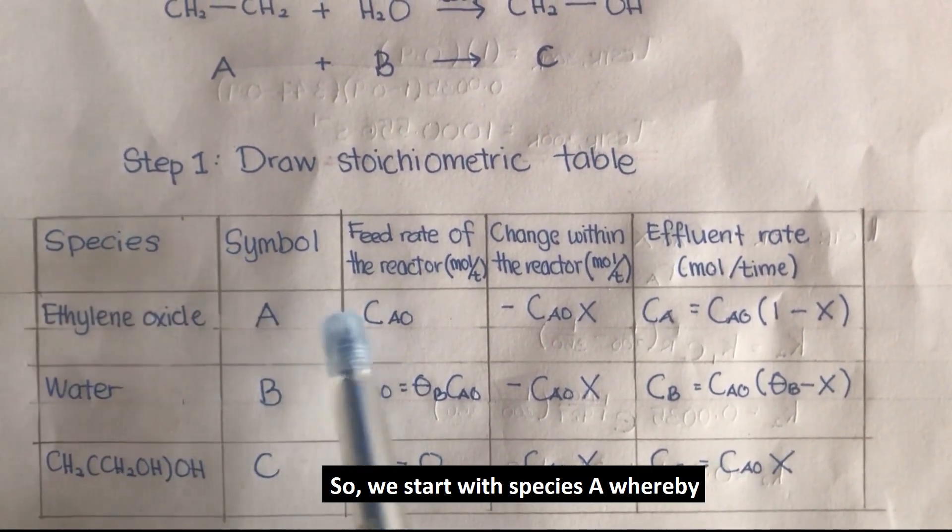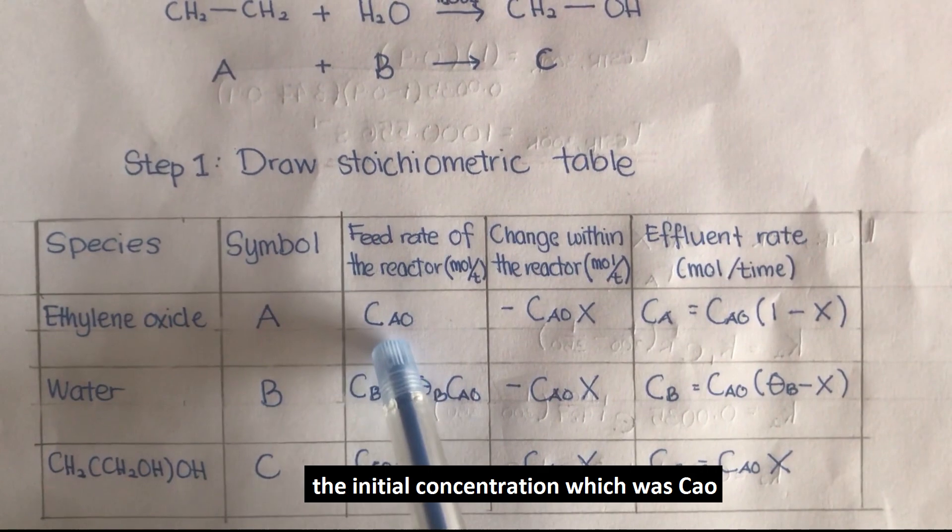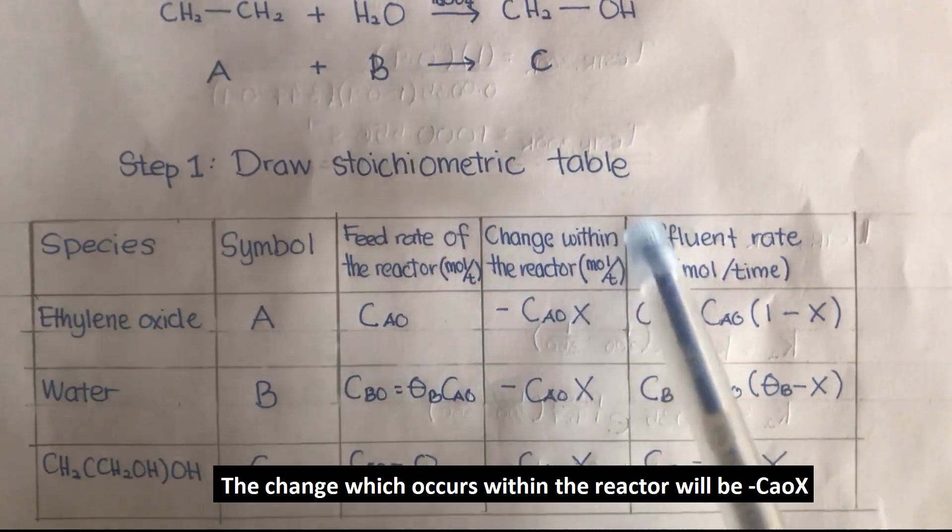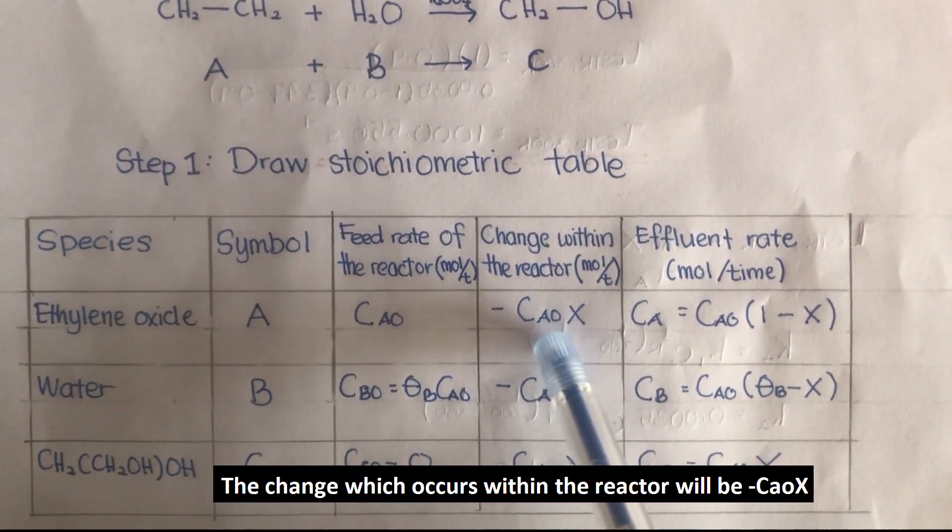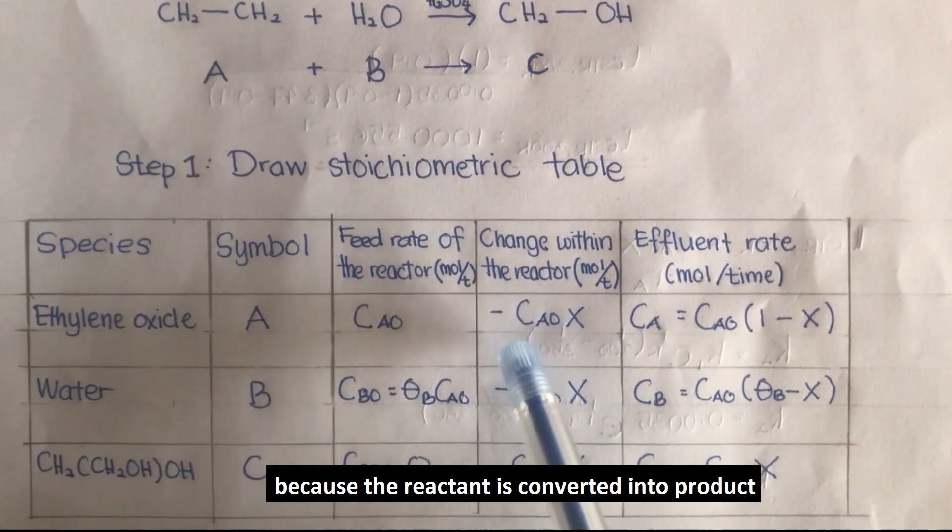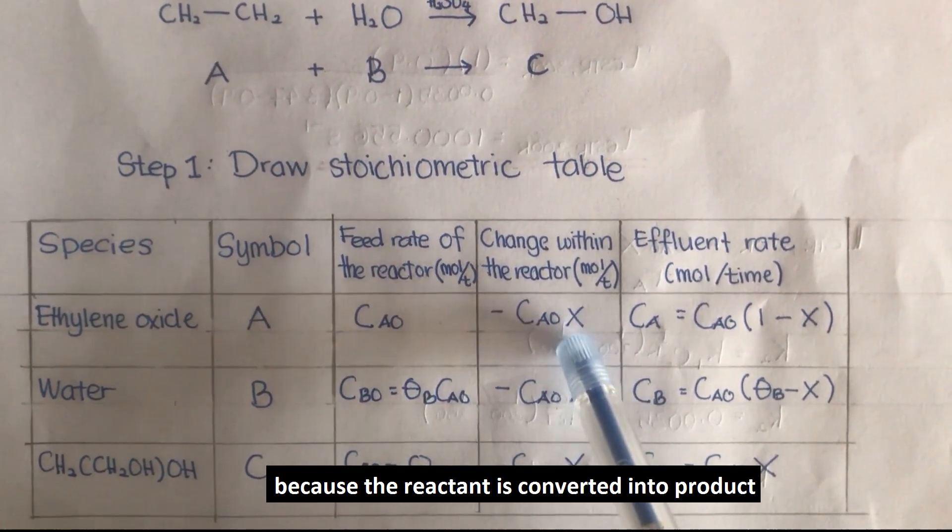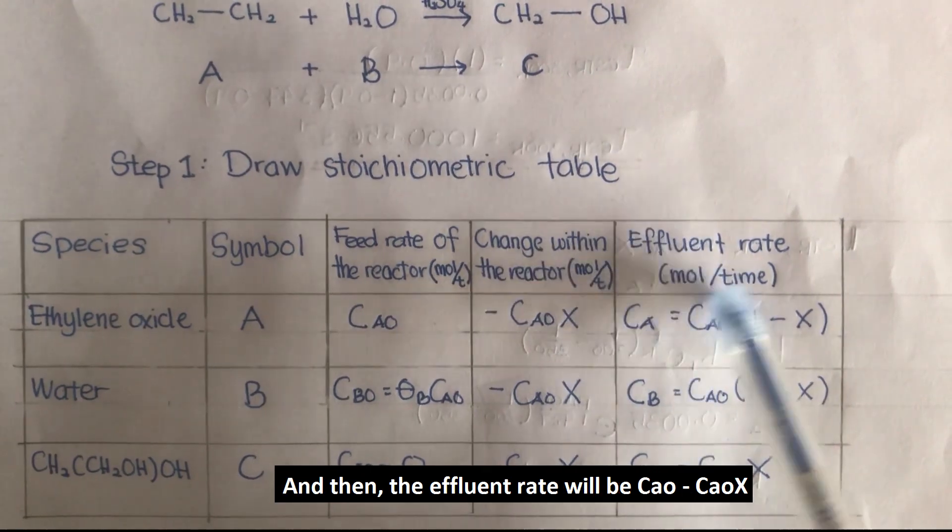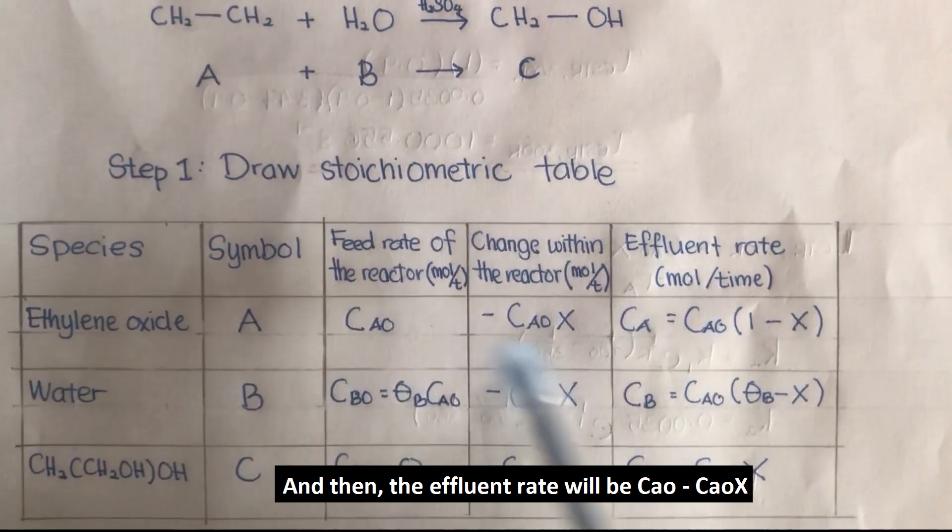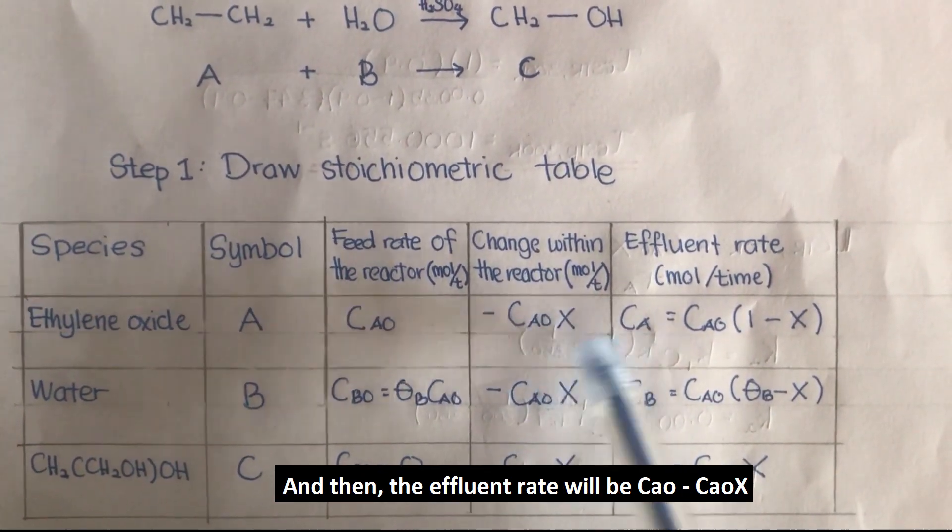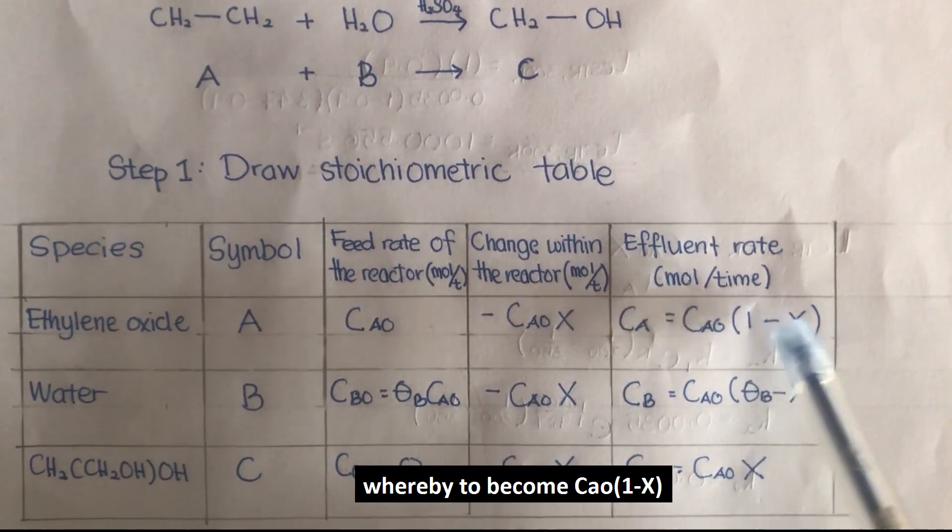We start with species A whereby the initial concentration is Ca0, the change which occurs within the reactor will be negative Ca0X because the reaction is converted into product, and then the effluent rate will be Ca0 minus Ca0X, which equals Ca0 times 1 minus X.